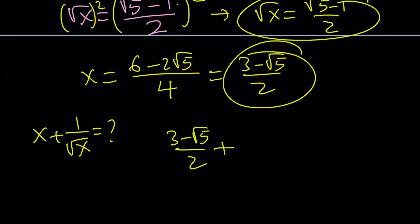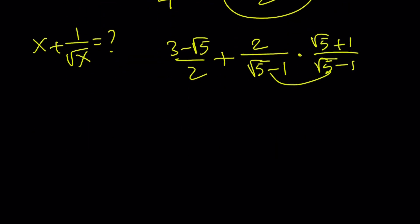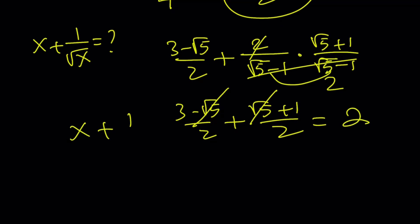x plus 1 over square root of x. Uh-oh, I got to revert it or invert it or reciprocate it or whatever, whatever the right word is. Root 5 plus 1, root 5 plus 1, rationalize the denominator. I already told you. This is 4. 2 goes into 4 twice and you get 3 minus root 5 over 2 plus root 5 plus 1 over 2. And guess what? Root 5 cancels out. 3 plus 1 is 4. 4 over 2 is 2. Uh-oh, that was easy, right? Sort of. So the answer seems to be 2, but let's go ahead and do 1b.